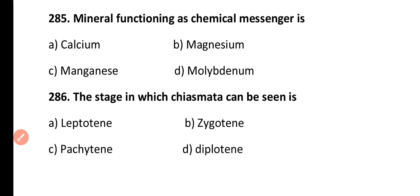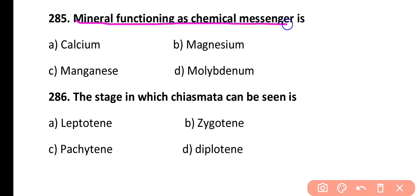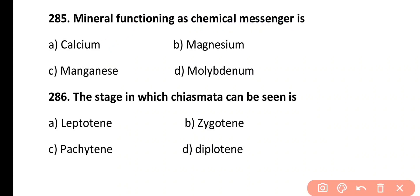Question 285. A mineral functioning as a chemical messenger is: calcium, magnesium, manganese, or molybdenum. Correct answer is Option A. Calcium acts as a second chemical messenger.